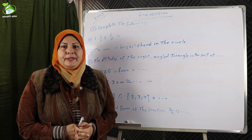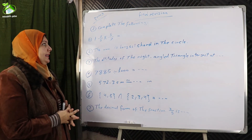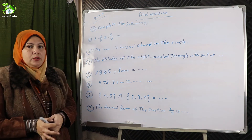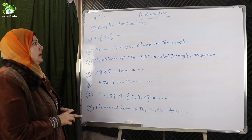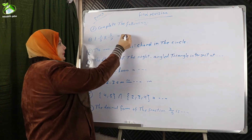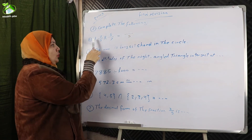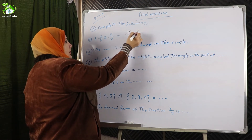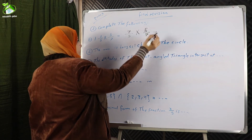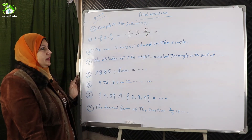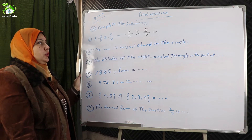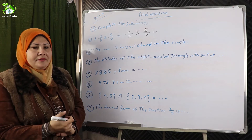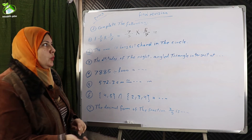Second exercise — complete the following. Number one: 1 and 2/5 times 5/7. It is a mixed number times a fraction, so it is better to convert the mixed number to an improper fraction. One times five equals five, plus two equals seven, giving seven-fifths. Seven-fifths times five-sevenths — note that seven-fifths is the multiplicative inverse of five-sevenths, so any fraction times its multiplicative inverse equals one.